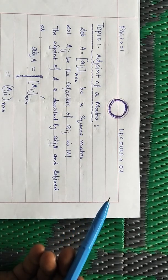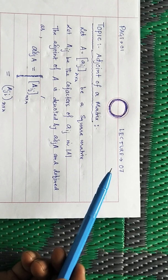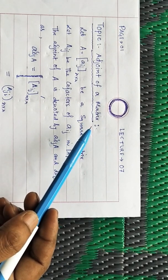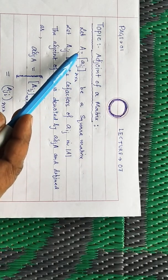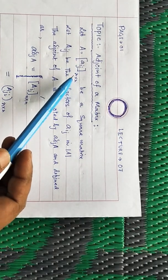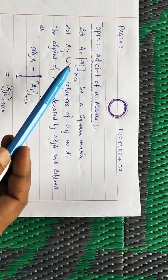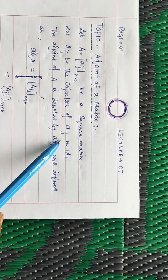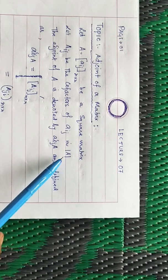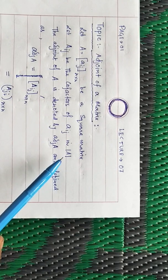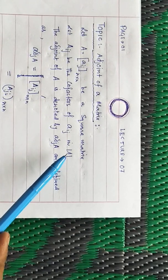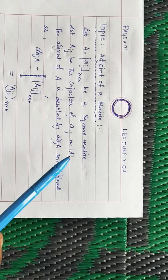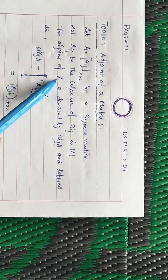Good morning, dear students. Today in Lecture 7, I am going to discuss a very important topic called the adjoint of a matrix. First, I will define what is the adjoint of a matrix. Suppose A is a square matrix of order n whose entries are of type a_ij, like a11, a12, a13, a21, a22, a23, and so on. Let capital A_ij be the cofactors of small a_ij in the determinant of A. We know that cofactors can be calculated for the elements in a determinant, and since every square matrix corresponds with a determinant, we find the cofactor of the elements of the determinant of A.